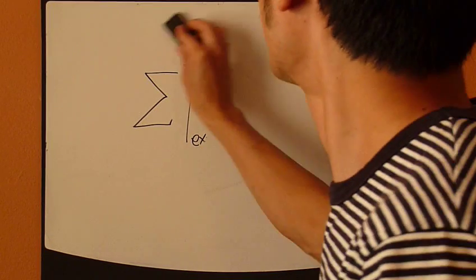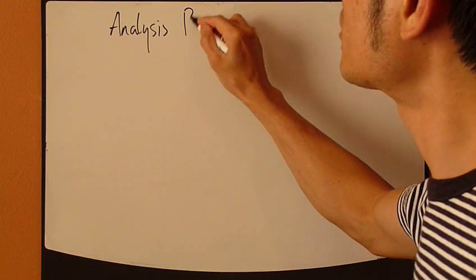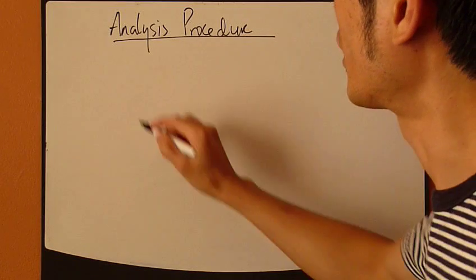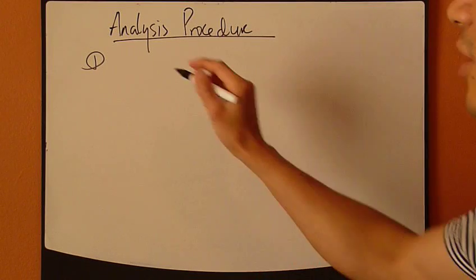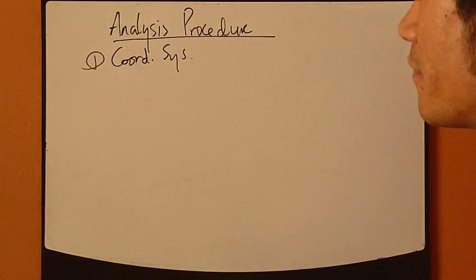Okay. Now, let's look at how we apply it. To analyze dynamics problems in this chapter, let me use a six-step method. So let's look at the analysis procedure. Six steps. Step one. You first define a coordinate system.